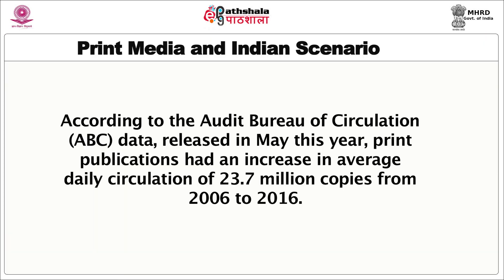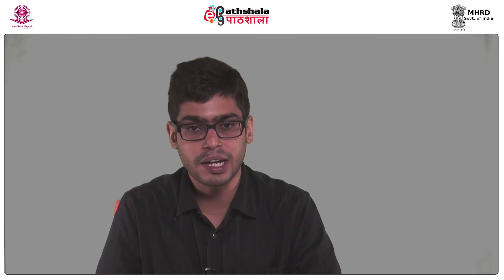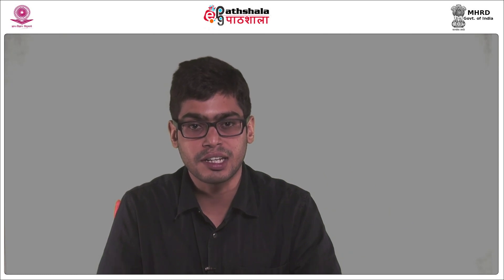In India, the print media story is pretty different. According to the Audit Bureau of Circulation data released in May 2016, print publications had an increase in average daily circulation of 23.7 million copies from 2006 to 2016, defying the trend prevalent in the USA and Europe where print circulation is in slump. The average number of copies circulated per day grew to 62.8 million from 39.1 million in 2006, a compound annual growth rate of 4.87%. Among the four main geographic zones, the north showed the highest growth at 7.83%, followed by south at 4.95%, and then west and east at 2.81% and 2.63% respectively. According to the WAN-IFRA World Press Trends 2016 report.